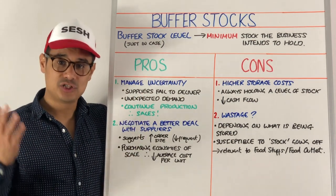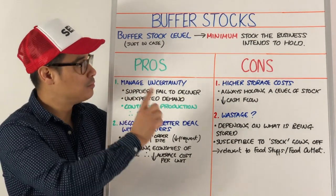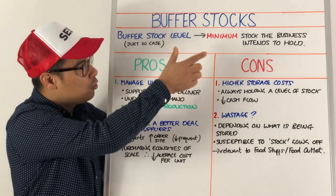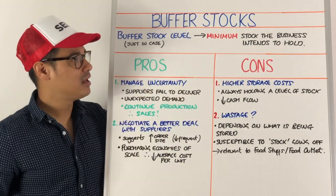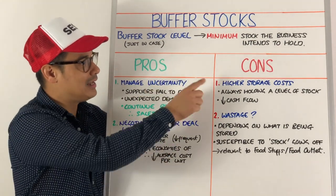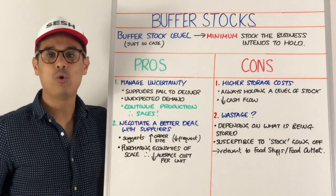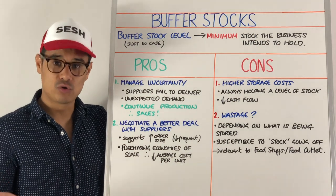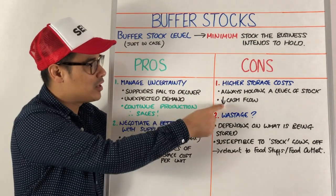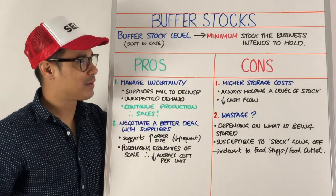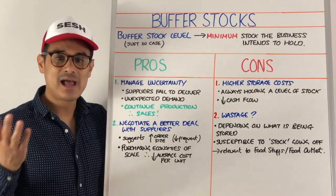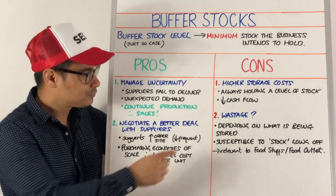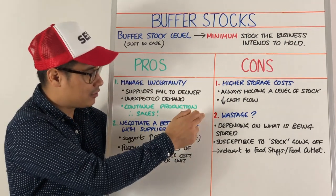Now looking at the disadvantages — the cons of buffer stocks. Firstly, because you're holding a minimum level of stock, there are always going to be storage costs, so your storage costs are likely to be higher. This means you're paying for that storage and your cash flow is going to be lower.